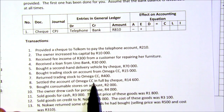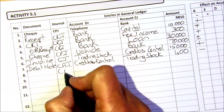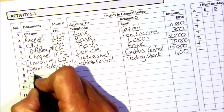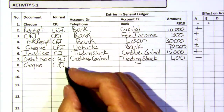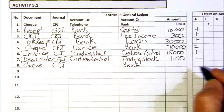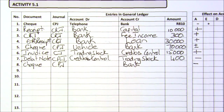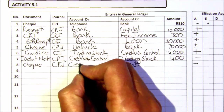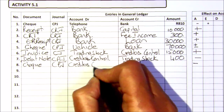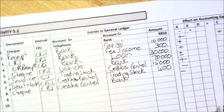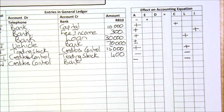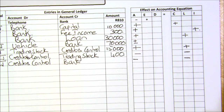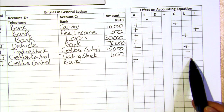On the 8th, we settled the account of Omega in full. We're settling — we're paying — so it's the cash payments journal. Either a check or it could have been an internet transfer. Cash payments: we're paying money, so our bank — our asset — is going down. We're paying our creditors, so it's creditors' control. Creditors are a liability, and you're paying the liability, so your liability is going down. Minus on the left, minus on the right.